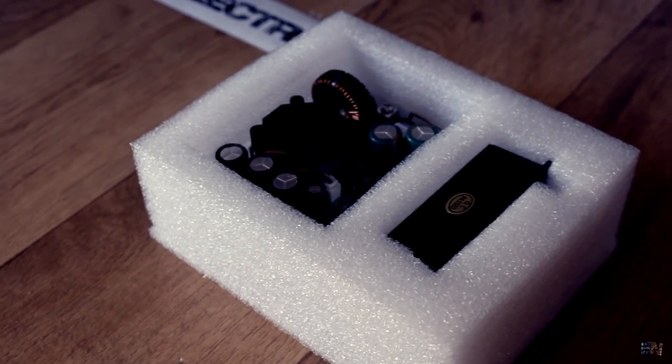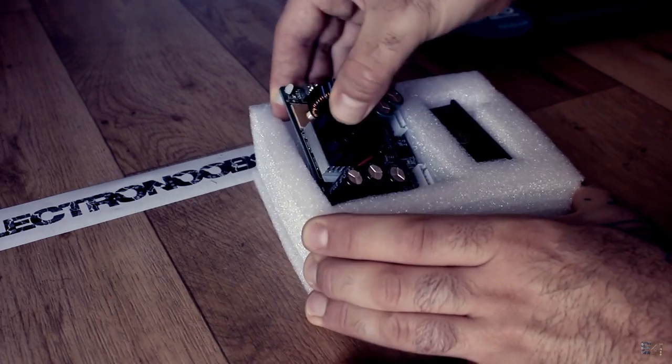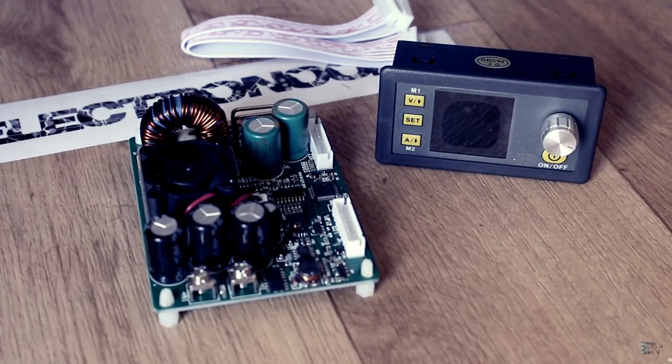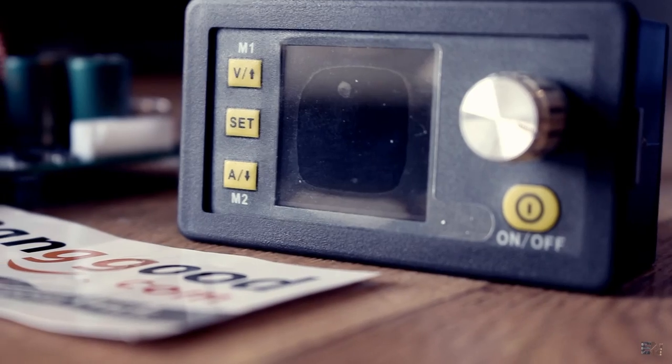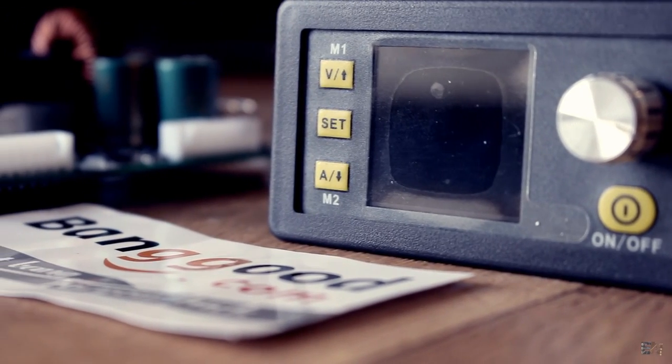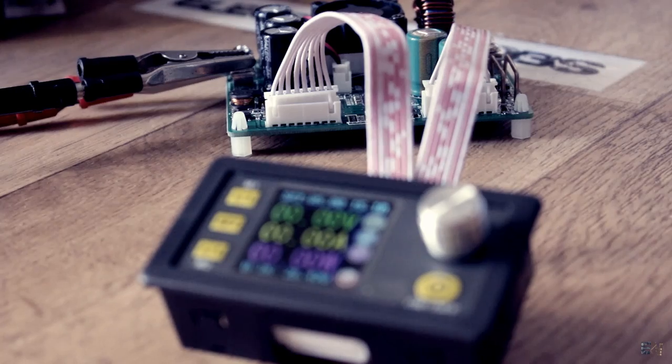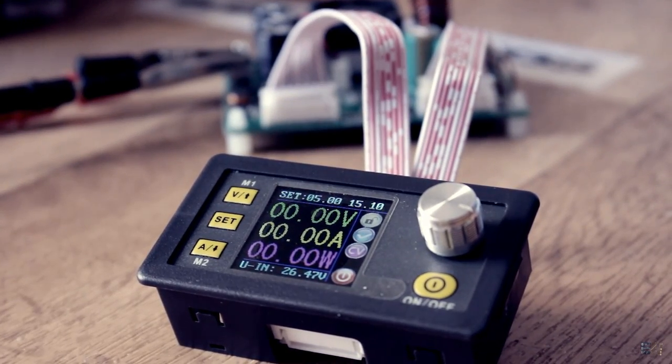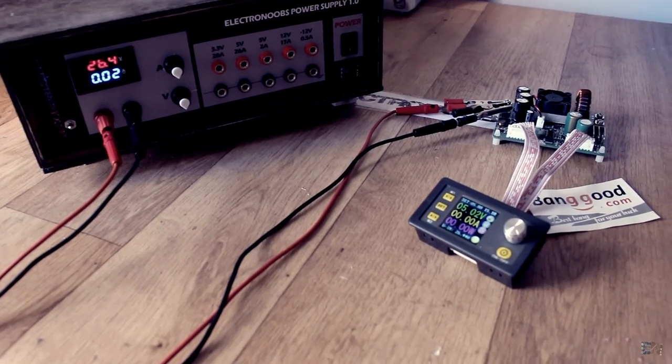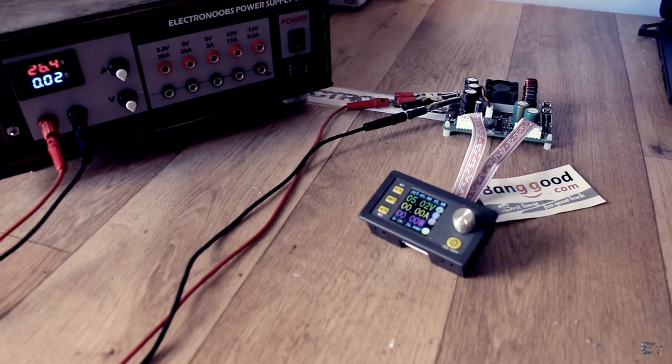A few days ago I received this awesome power supply kit from Banggood. I will soon 3D print a case for it and start using it. It works nice, has a decent color LCD display and can handle voltages from 0 to 60 volts. But I thought it would be nice to build my own bench power supply for my workshop and show you how to build your own.